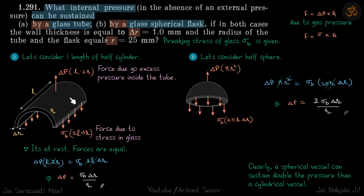The forces on this half glass tube or this hemispherical glass shell we need to balance, and the forces will be of two kinds. One will be due to the gas pressure, that is delta p into A, and second will be due to the stress on the glass itself, that will be sigma into A. We need to balance these two forces, one due to pressure and one due to stress in the material.